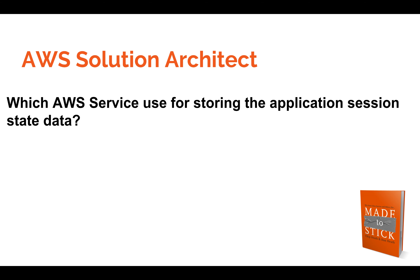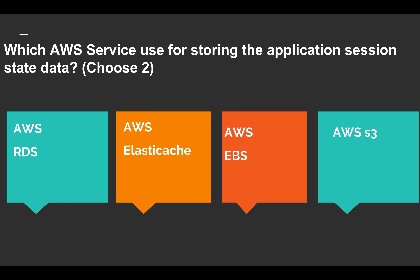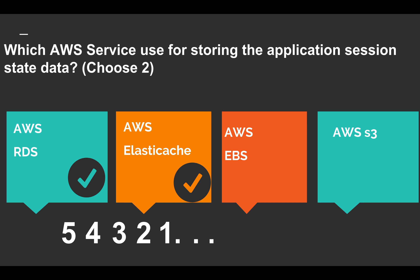Let's move to the next question: which AWS service is used for storing application session state data? The options are: RDS, ElastiCache, EBS, and S3 — choose two answers. The answer is AWS RDS and ElastiCache. You can store your application state data in RDS, which is a database service, and ElastiCache, which is a caching database service.